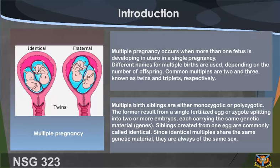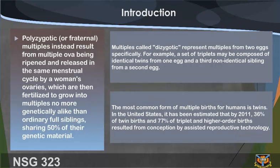Monozygotic multiples result from a single fertilized egg, or zygote, splitting into two or more embryos, each carrying the same genetic material. Siblings created from one egg are commonly called identical. Since identical multiples share the same genetic material, they are always of the same sex. Polyzygotic, or fraternal, multiples result from multiple ova being ripened and released in the same menstrual cycle.